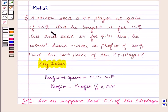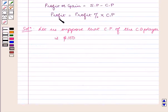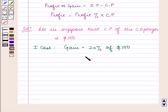The gain in the first case is 20%, and as profit equals profit percent times CP, this implies in the first case, gain equals 20% of $100, which is 20/100 × 100, equal to $20.